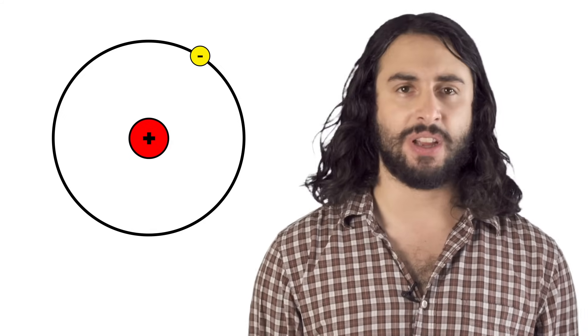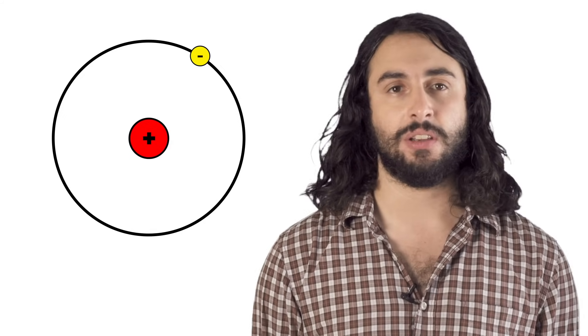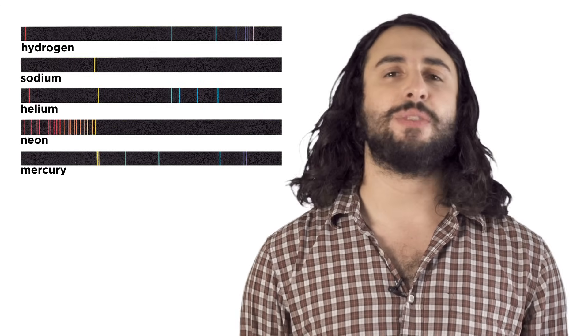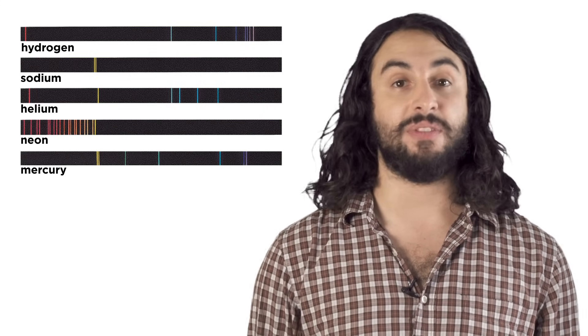If an atom has positively charged protons and negatively charged electrons, why are atoms stable? Why don't the electrons just collide with the nucleus? And what were these emission spectra that we can see? What is it about different elements that makes them emit light of different colors?